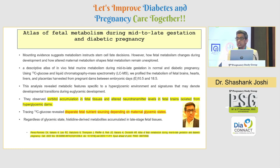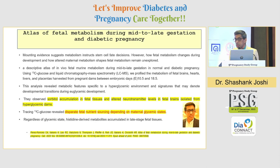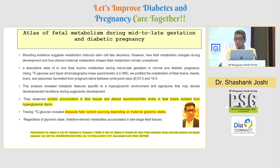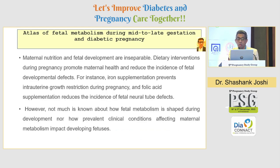Many times, a woman might be very well controlled in gestation — in the third trimester she may not even have a single glucose peak — and yet she may have an intrauterine fetal death or a congenital malformation. While someone may have an HbA1c of 11 and might have a normal baby. That mechanism is understood from this fetal atlas: it is actually the histidine-derived metabolites in the late stage of fetal tissue which determine the outcome. So not all outcomes are only related to glucose control — some are, some are not.